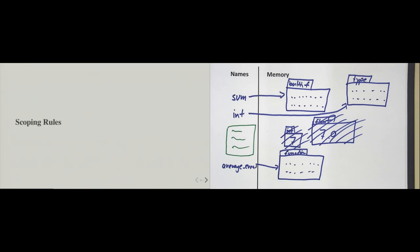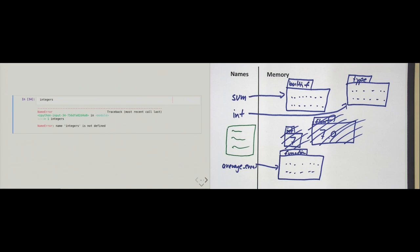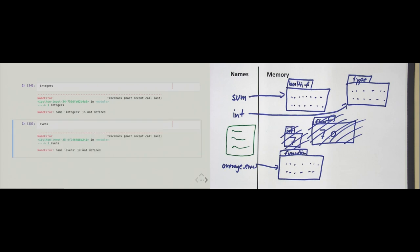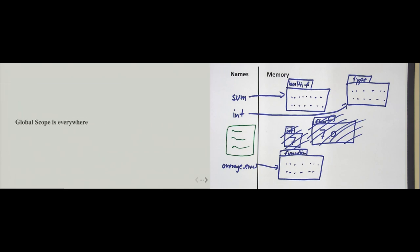Let's discuss the scoping rules. The first rule is that the local scope, or function scope, disappears after a function call is over. That means variables like 'integers' and 'evens' that existed inside the function no longer exist outside it — trying to read them gives a NameError. This is how Python behaves.